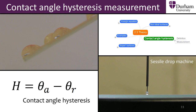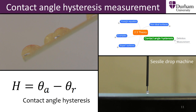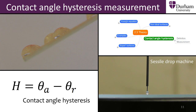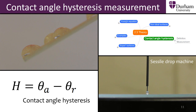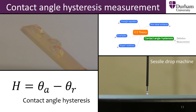One method of measuring contact angle hysteresis is by using the Cecil drop machine. The machine films a water droplet on a surface, side on, using a high speed camera. The volume of the drop is then varied using a needle. The advancing contact angle is measured after increasing the volume of the drop, whilst the receding contact angle is measured after decreasing the volume of the drop. These angles, and the difference between them, vary widely depending on the surface.